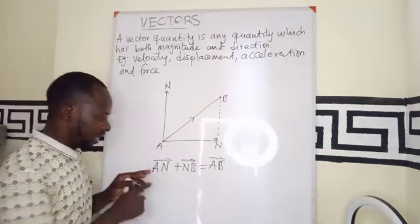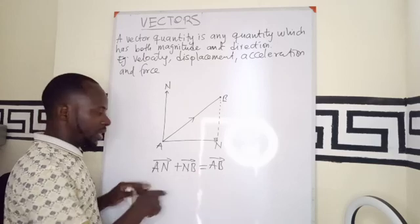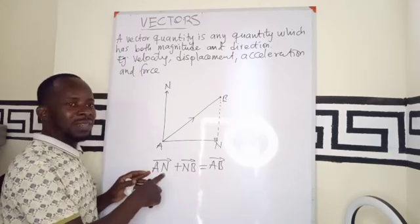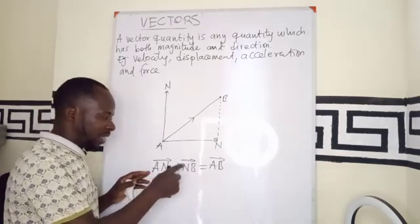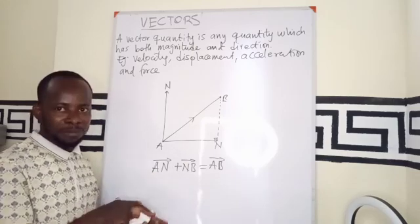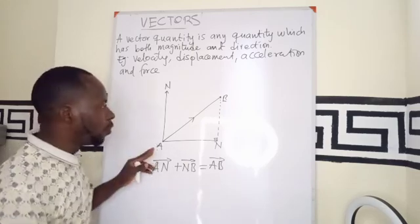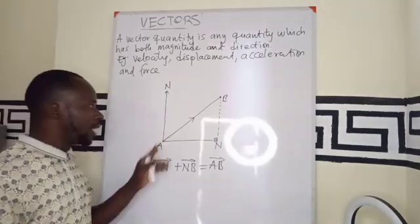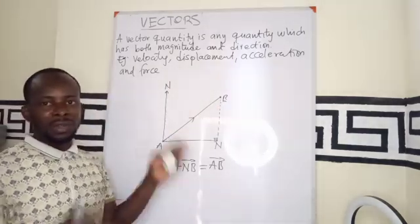In this place, the vector AB equals to vector AN plus NB becomes what we call a resultant vector. The result of moving direct route from A to B. That is our resultant vector.